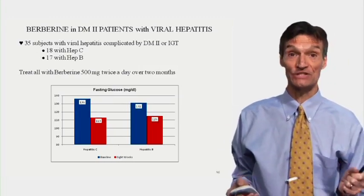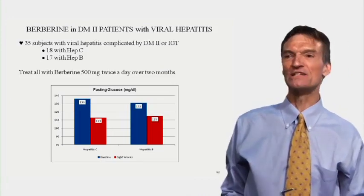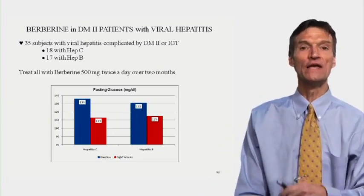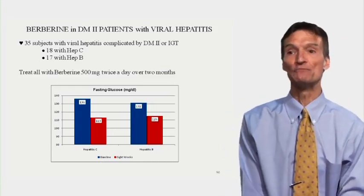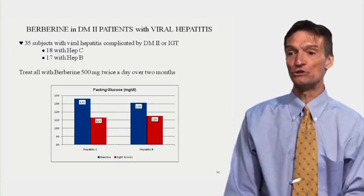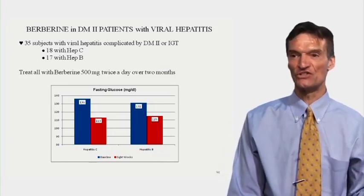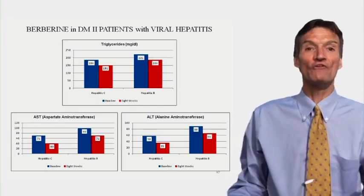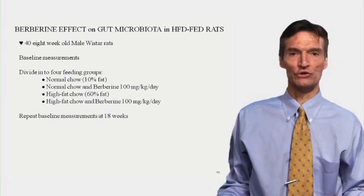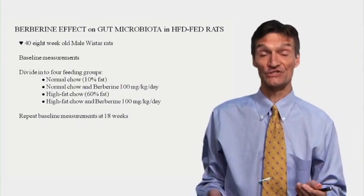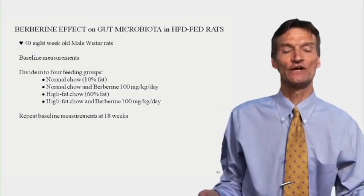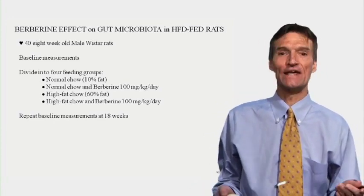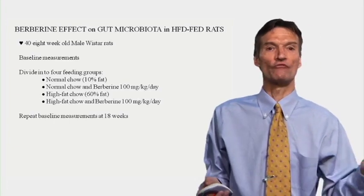What about individuals with viral hepatitis and diabetes? We're reluctant to treat them with standard drugs because they're toxic to an already inflamed liver. 35 subjects with viral hepatitis complicated by type 2 diabetes or impaired glucose tolerance — 18 with hepatitis C, 17 with hepatitis B — treated with berberine 500 mg twice daily for two months. Fasting glucose improves in both hepatitis C and hepatitis B patients just as it does in individuals with normal livers. Triglycerides fall. Liver chemistries — elevated due to fatty liver and viral hepatitis — improve as well. So you can use berberine freely in individuals with viral hepatitis. Berberine protects the liver and kidney and every cell in the body from inflammation, toxicity, oxidative stress, and oxygen deficiency.